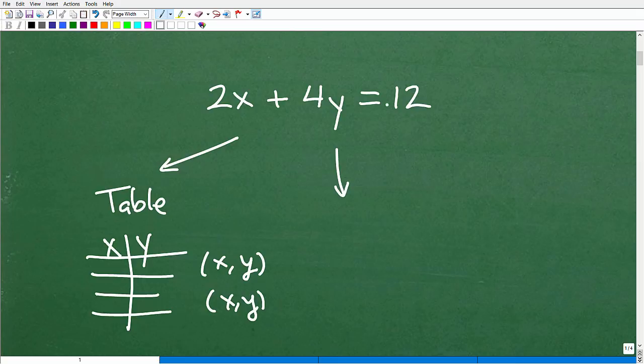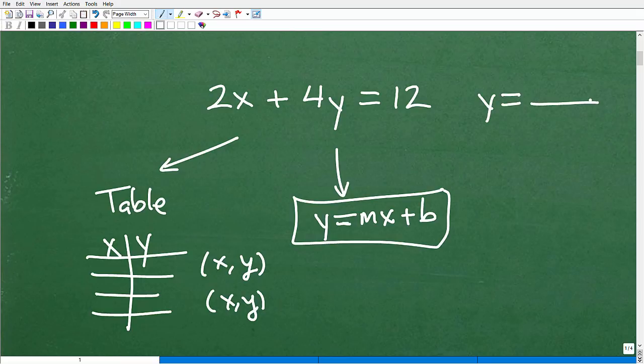Now, another way we can approach this problem is to rewrite it in Y equals MX plus B form. So we would have to shuffle things around and do some algebra stuff here. But we could rewrite this in Y equals MX plus B form, which is a great format to graph lines. It's a very direct approach to graph lines once a line is written in this format. However, you can see that this line is not in this format. It would have to be exactly Y equals everything. We don't have a Y equals, we have 2X plus 4Y equals something. So that's another option.